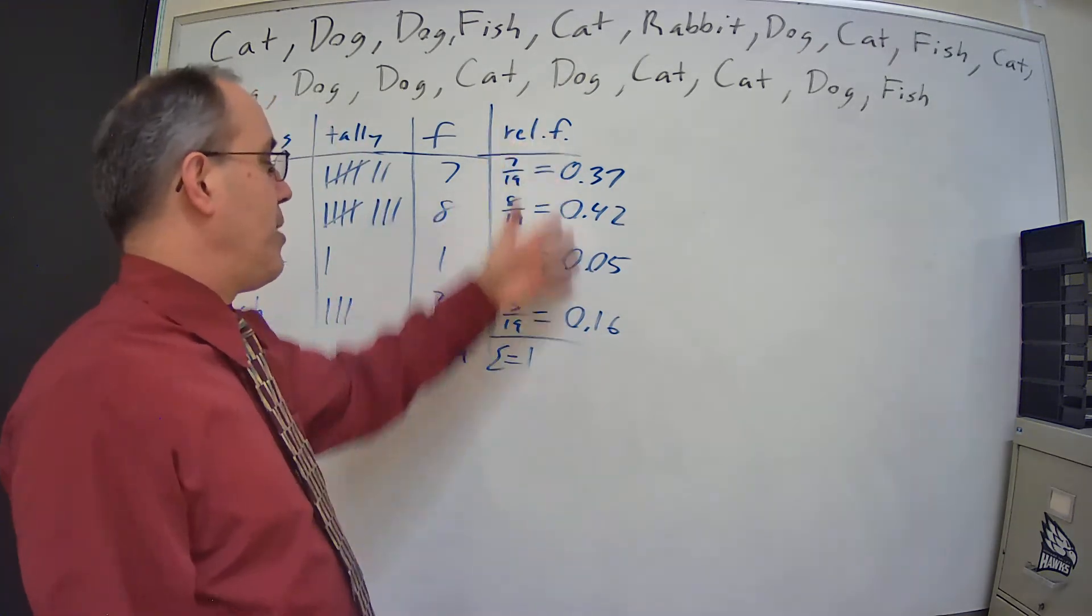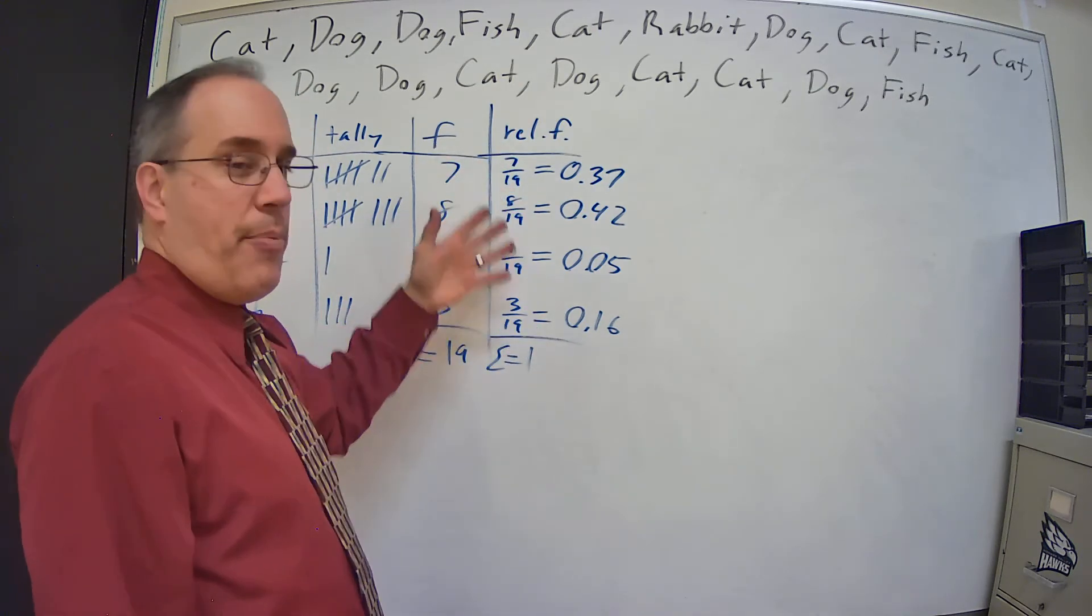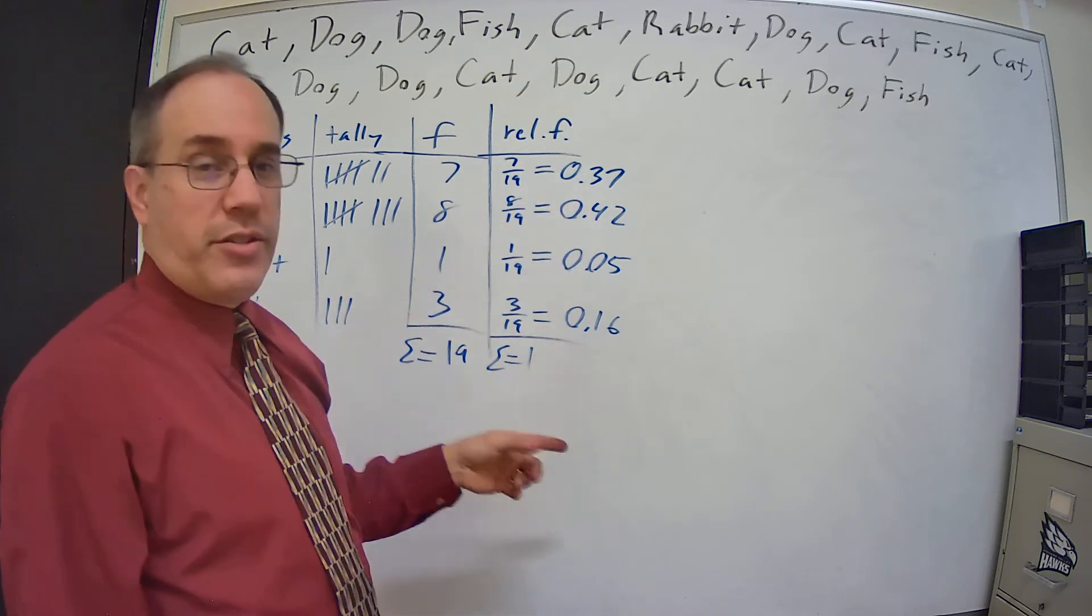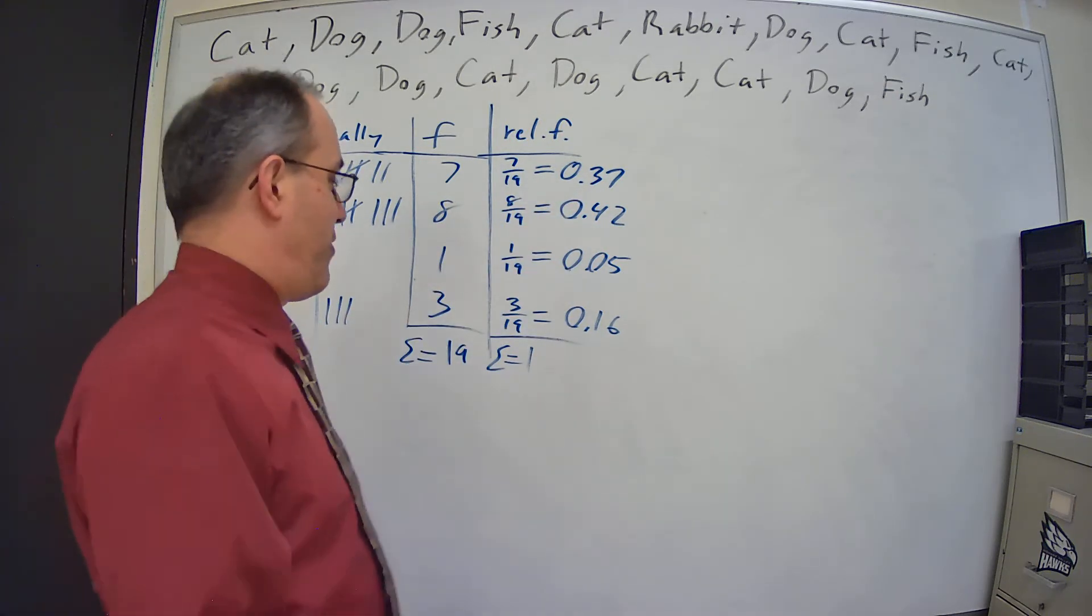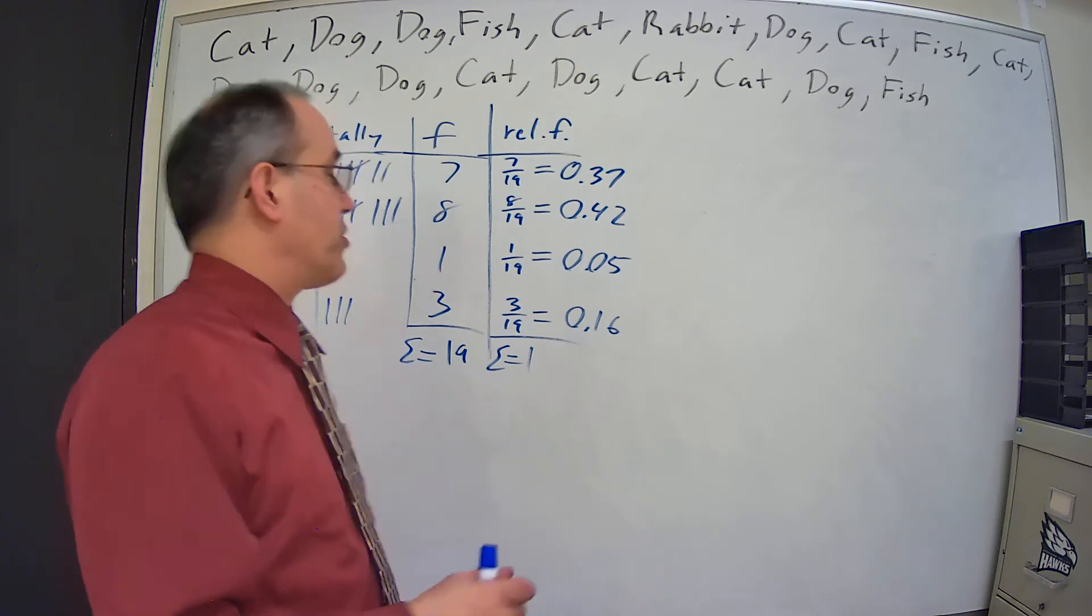Remember, if it didn't come out to be exactly 1.00, then that could happen from rounding. We did have to round these numbers, but if it gets too far away from that, then you probably have a mistake in there somewhere.